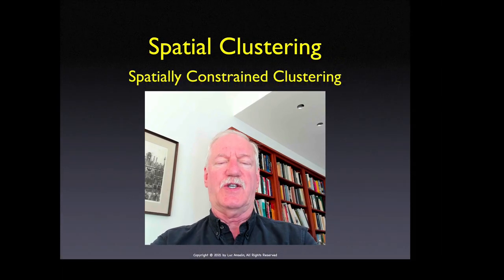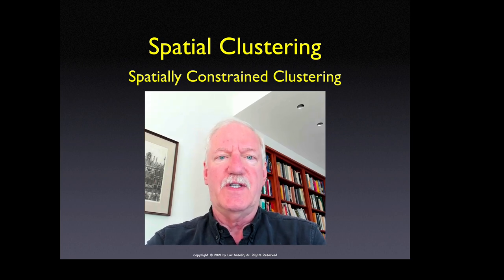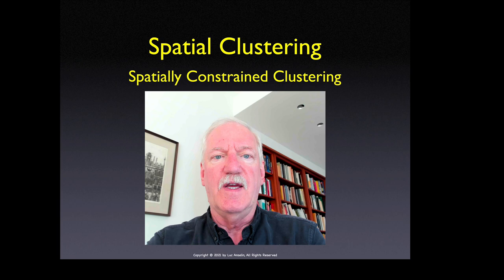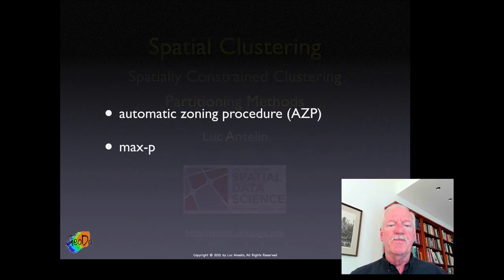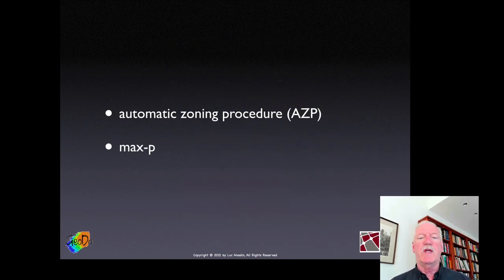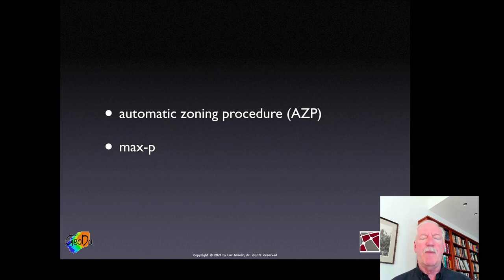Welcome to the final lecture in this class. This is the third one in the group dealing with spatial clustering, spatially constrained clustering, and now we consider partitioning methods. We're going to look at two methods: AZP, the Automatic Zoning Procedure, mostly associated with the work of Stan Openshaw, and MAXP, a fairly recent development. The MAXP approach is different in that it determines the number of regions k endogenously.